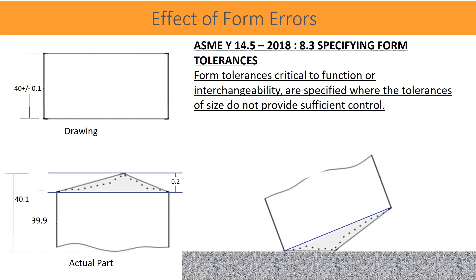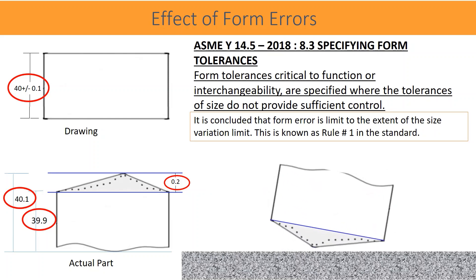In the given example of a drawing, the part height is specified as 40 millimeters nominal size. The tolerance of size is given plus and minus 0.1 millimeters. In other words, the minimum size allowed is 39.9 millimeters and maximum size allowed is 40.1 millimeters. This means total variation of the surface allowed is 0.2 millimeters. This is form error of surface called flatness. It is concluded that form error is limited to the extent of the size variation limit.